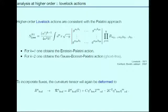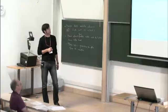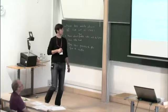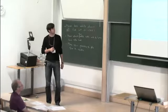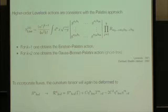Our main question at a technical level was to see whether we can nevertheless find some interpretation via the Palatini approach. To look at higher order gravity actions, we considered the Lovelock action, which is consistent with the Palatini approach. It's given by this expression, where this is the determinant and this is the usual Riemann tensor. For k equals 1, you find the Einstein Palatini action; for k equals 2, the Gauss-Bonnet Palatini action, and so on. Then, similar as we did before, to incorporate the fluxes, we changed our Riemann tensor in this way, very analogously to what we did before.